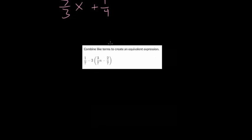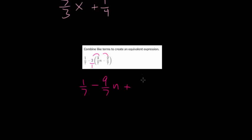For this one, we have parentheses, so we're going to need to distribute. We have one-seventh minus three times three-sevenths n. You can think of this as three over one, so you're essentially just multiplying the numerators, and the denominators get multiplied by one. So you get minus nine over seven n. For the second term, minus three times negative two-sevenths gives a positive answer: six over seven.